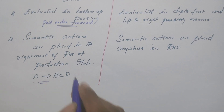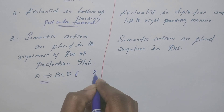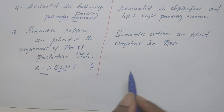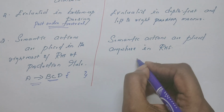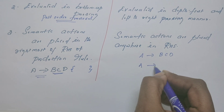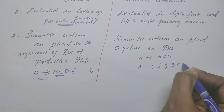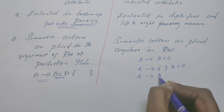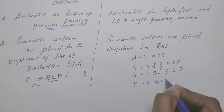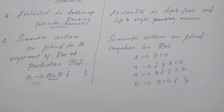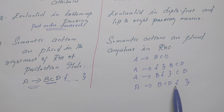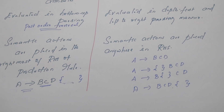For example, in S-attributed, the semantic actions are always kept at the rightmost end of the production rule. Whereas in L-attributed SDT, the semantic action can be placed anywhere. For example, consider the production rule A derives BCD — the semantic action can be written before B, between B and C, between C and D, or at the end. So in L-attributed, it can be written anywhere in the production rule.